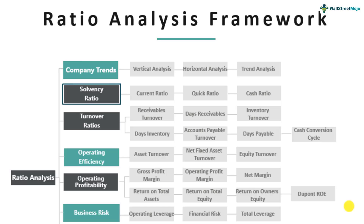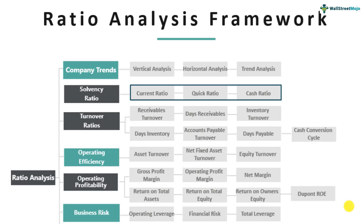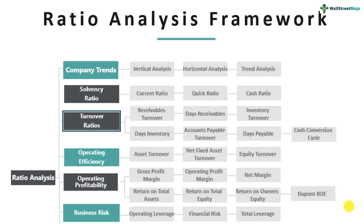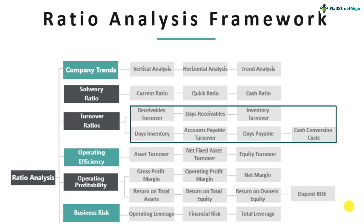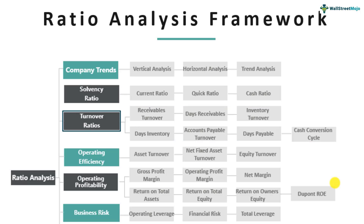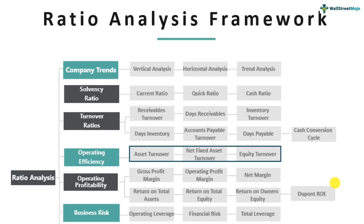Solvency ratios and turnover ratios are used to understand the company in terms of its assets versus liabilities from a short-term point of view — whether current assets are large enough to ensure that short-term liabilities can be paid. We look at solvency ratios in that context. For turnover ratios, the primary thing is how fast the company is able to convert inventory into finished goods, sell to customers, and receive cash. Operating efficiency looks at how well the company is able to identify and utilize its assets.